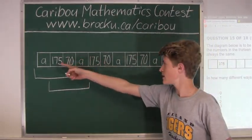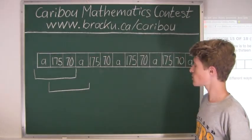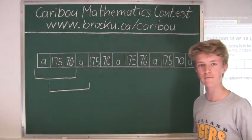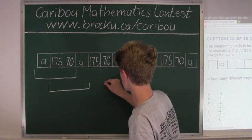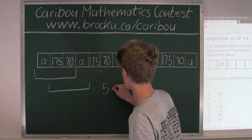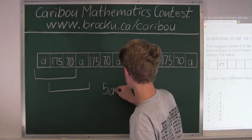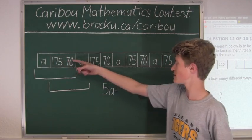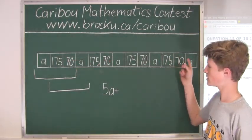So as you can see here, we have the pattern. So here we will take out, we have 1, 2, 3, 4, 5 A's, plus, and then we have 4 times 175, plus 70 here, here, and here.